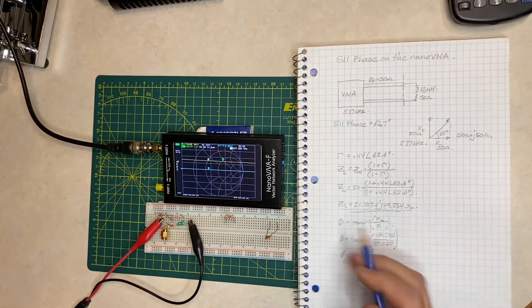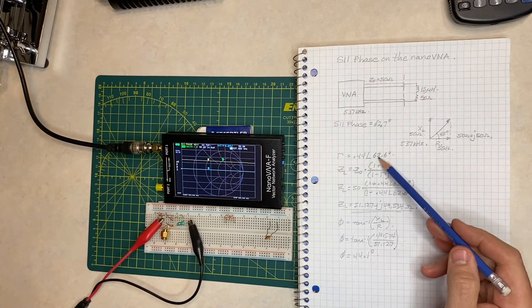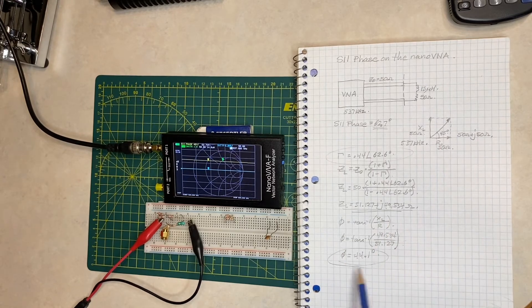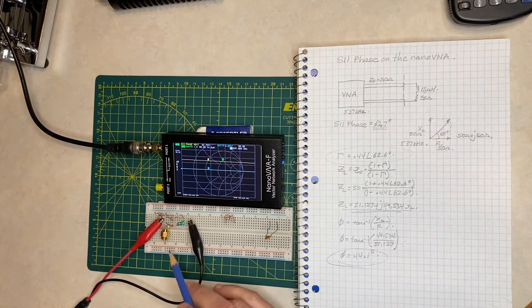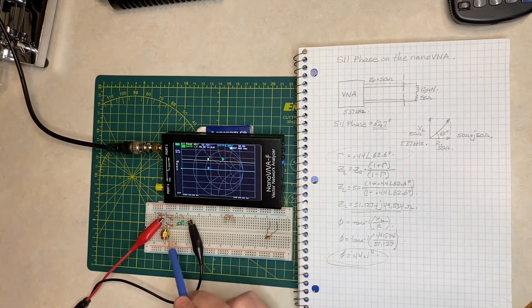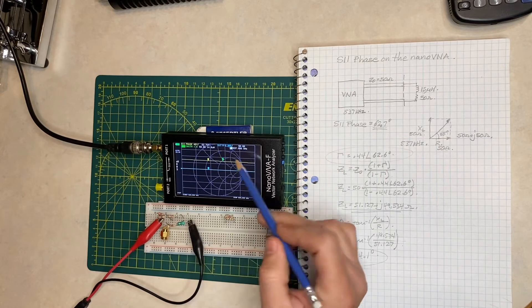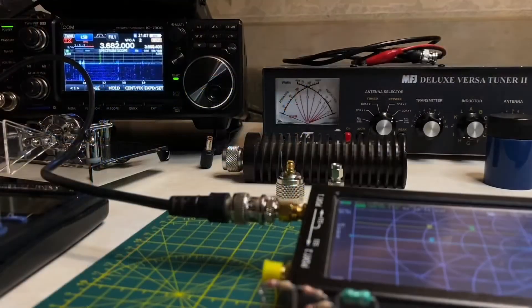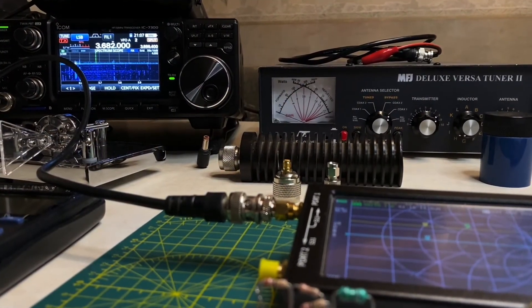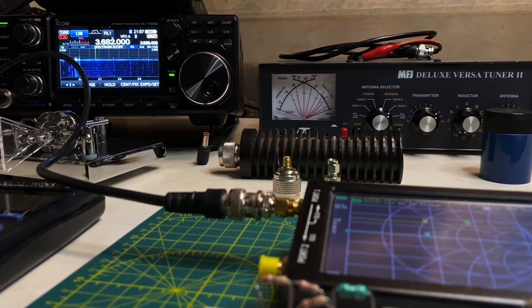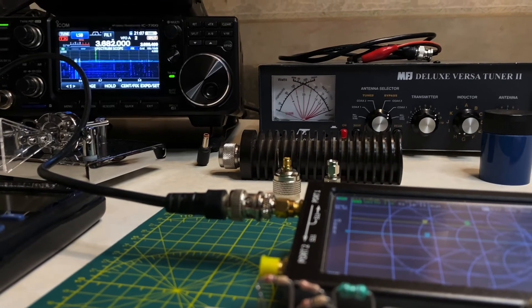So from that you can see that the S11 phase angle of the reflection coefficient is not the same as the phase angle in our circuit. Hopefully that demonstrates the relationship — they are related, because as the frequency changes, the reactance of the circuit changes and that changes the reflection coefficient. Thank you for joining me on this journey of discovery and learning with the nanoVNA — it's a never-ending thing.